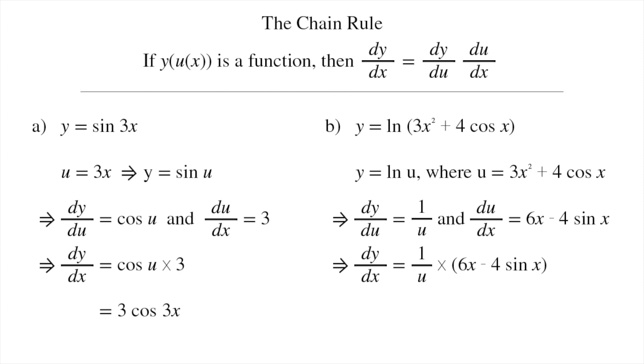Let's now change this u back to x and tidy things up a bit. So this equals (6x - 4sin(x))/(3x² + 4cos(x)). This is our final answer.